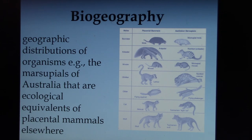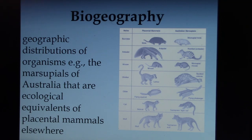Until humans arrived in Australia, all the mammals there were marsupials. There was even a marsupial wolf — not closely related to the timber wolf because it's a marsupial mammal. There were also marsupial mice and a tiger cat, among others.